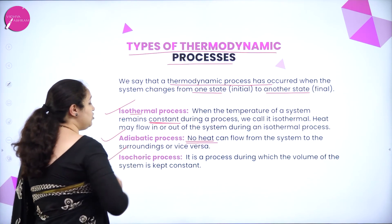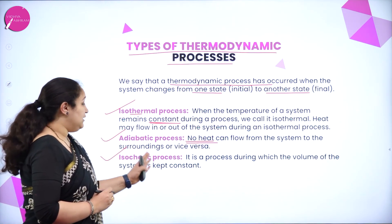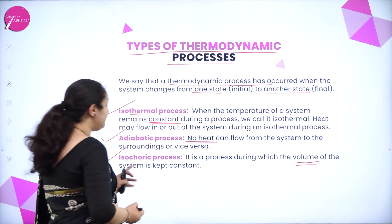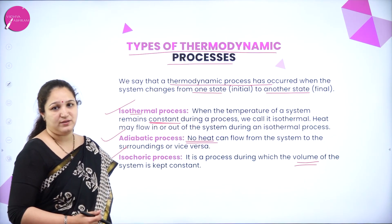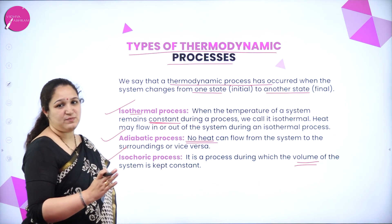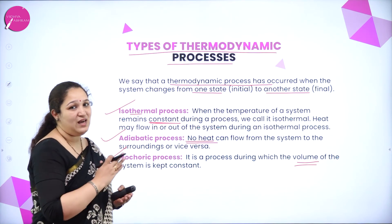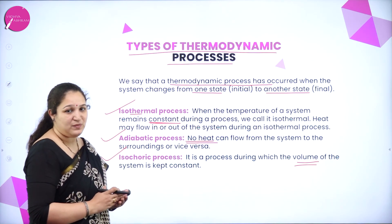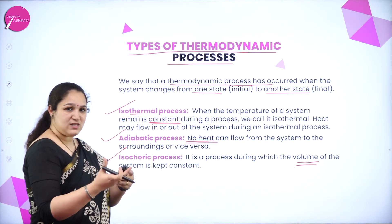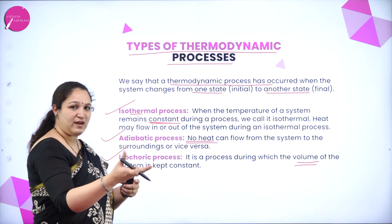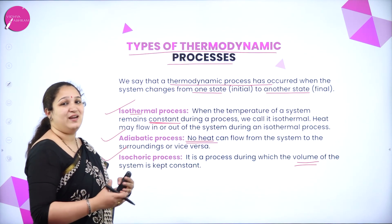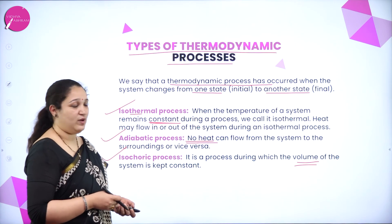Next is the isochoric process — the process during which the volume of the system is kept constant. Only volume of the system is kept constant, then we call it as the isochoric process. When the volume is kept constant from the initial state to the final state, the other state variables of the system can change.